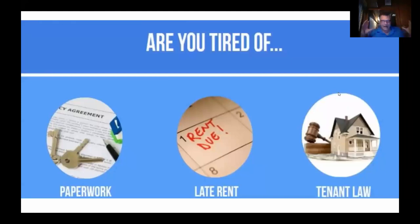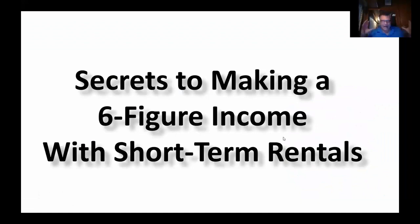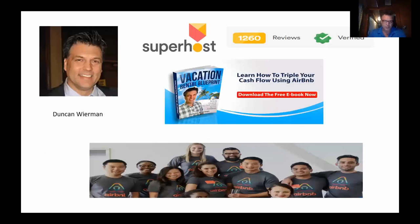Duncan explains that in his business, he was totally tired of tenants, tired of paperwork and late rent — that's what led him on his journey to get into Airbnb and really maximize his income. What he's going to share tonight are just a few of the secrets to making a six-figure income. You really only need four to five properties — that's actually all you need to make $100,000 a year. A couple hours a week, four or five houses, and that will give you a $100,000+ net income.